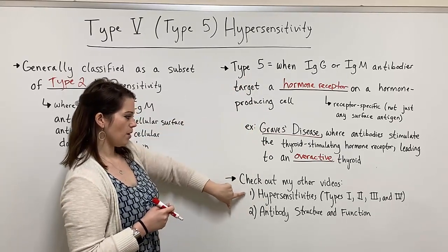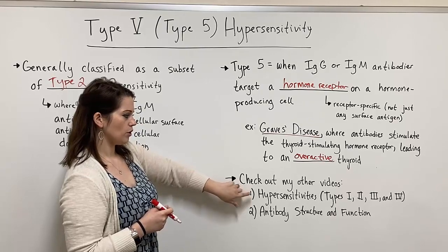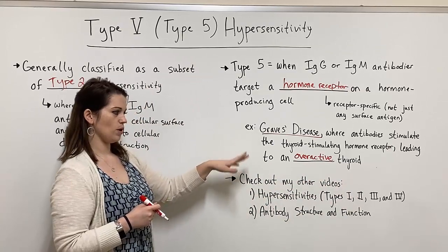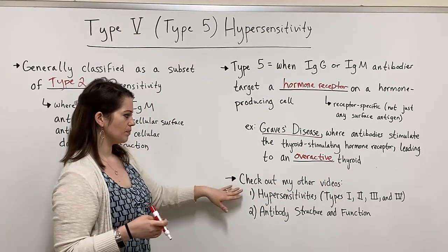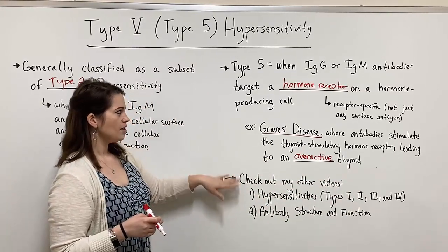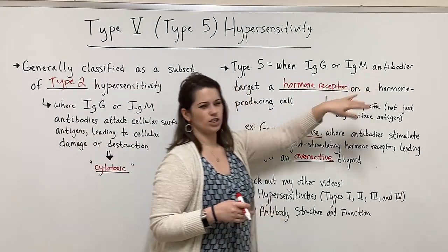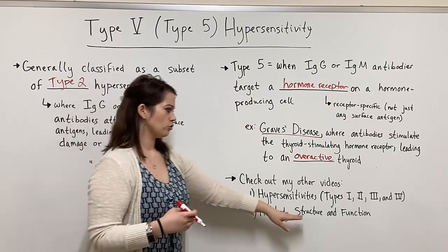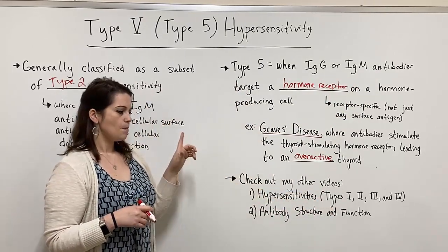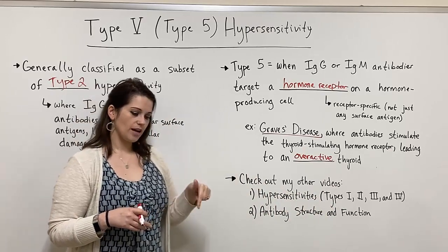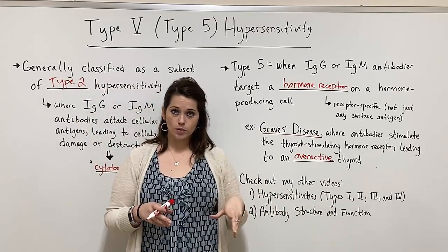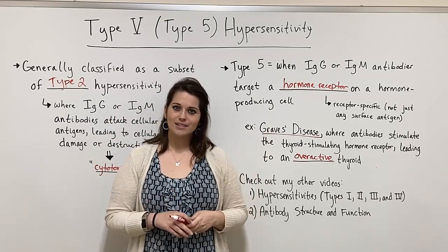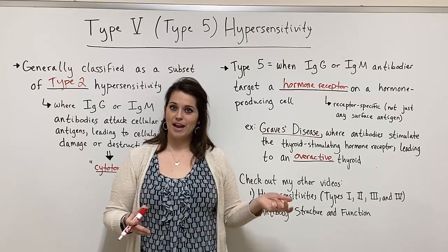I have another very popular video where I review all four of those classical types of hypersensitivity — type 1, type 2, type 3, type 4 — comparing and contrasting them, so make sure you check that one out. We've also talked about antibodies a lot in this video, these IgG and IgM antibodies, so if you want to learn more about antibodies and their structure and function, I've also got a video on that. Remember to subscribe, check out that link below for free study notes, and I will see you next time. Good luck with your studying and bye for now.